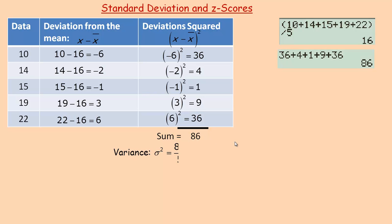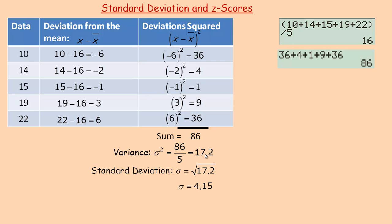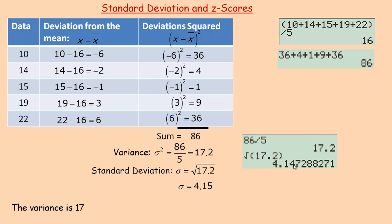Now what I'm going to do — this is called the variance. The population variance symbol is sigma squared, that's the lowercase Greek letter sigma. You take the sum and divide it by how many data points there are to get 17.2 — that's called the variance. The standard deviation is the square root of that. So we take the square root of 17.2 and get 4.15. So 86 divided by 5 is 17.2, that's the variance, and the square root of that gives me the standard deviation.